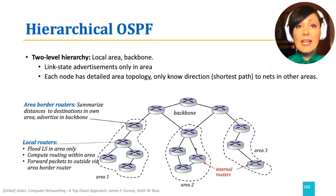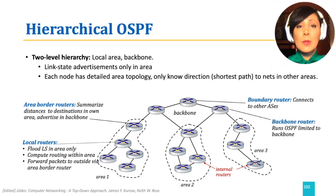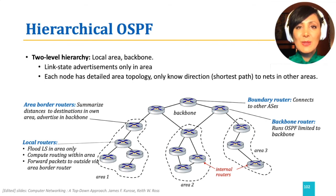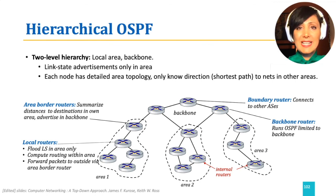Boundary routers connect other ASs with backbone routers running OSPF, limited to the backbone for this task. OSPF is a fairly complex protocol, and we are not going to discuss the details in this course, limiting our discussion to this high-level introduction. If you are interested to learn more, please start by looking at RFC 2328 for OSPF version 2 and RFC 5340, which expands it for IPv6.